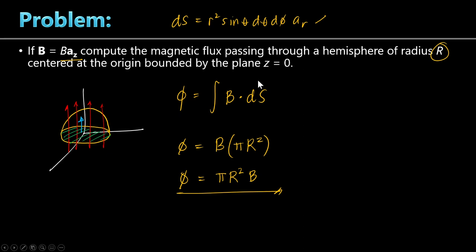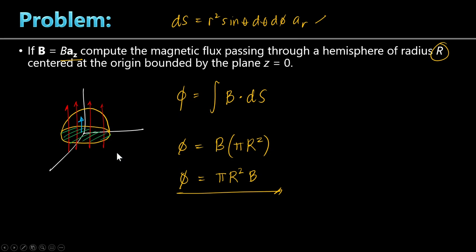Some problems may look difficult at first, but if you think outside of the box, you realize it is a tricky problem with an easier solution. This alternative gives the same answer as the conventional approach. So if you encounter this type of problem, the formula is simply phi equals pi R squared B.